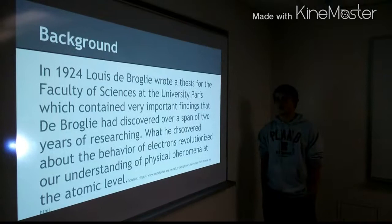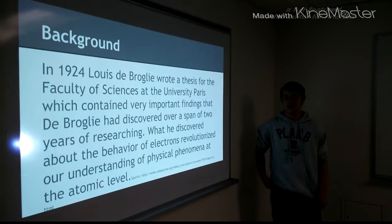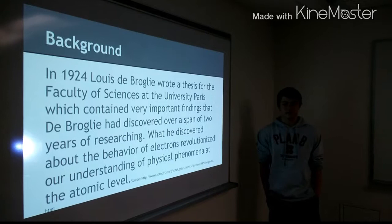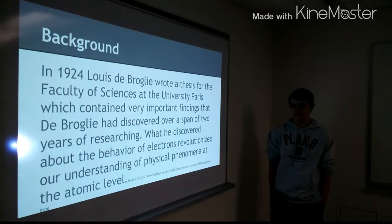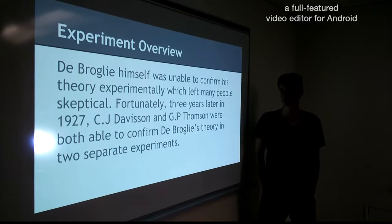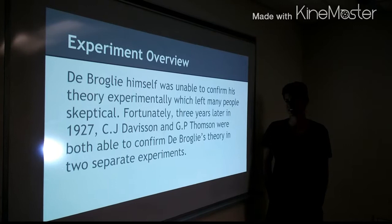In 1924, De Broglie wrote a thesis for the Faculty of Science at the University of Paris. This contained very important findings from about two years of research. What he discovered about the behavior of electrons revolutionized our understanding of physical phenomena at the atomic level. De Broglie himself was unable to confirm his theory experimentally, which left many people skeptical.